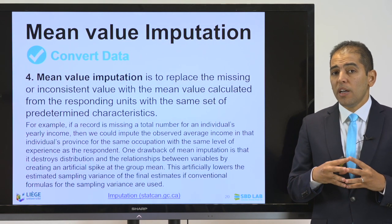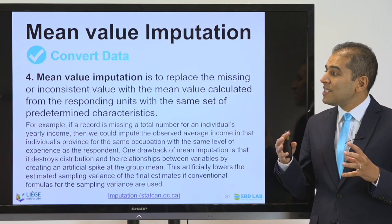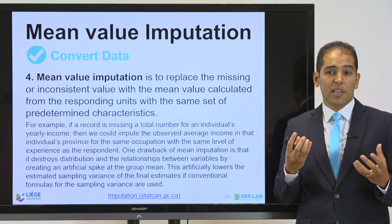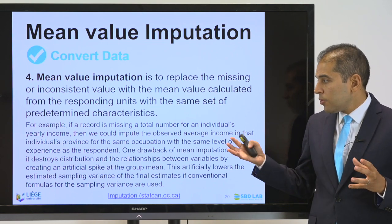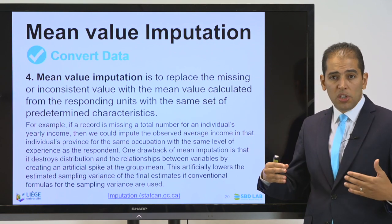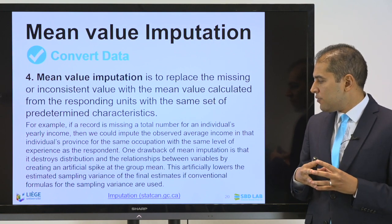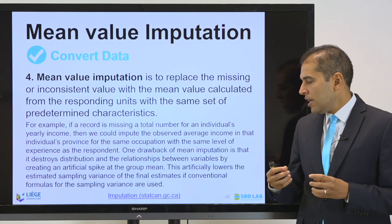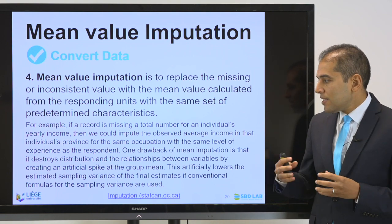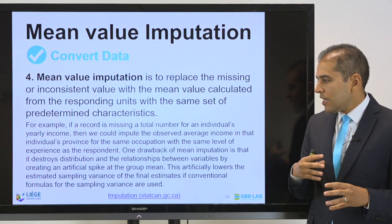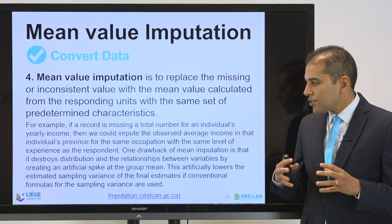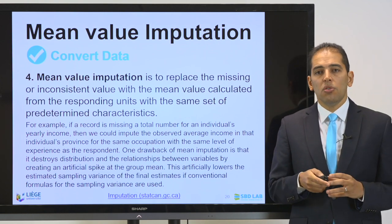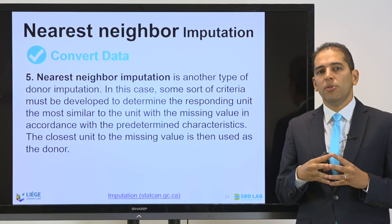The fourth type is mean value imputation, which replaces the missing or inconsistent value with the mean value calculated from responding units with the same set of predetermined characteristics. For example, if a record is missing an individual's yearly income, we could impute the observed average income in that individual's province for the same occupation and level of experience. One drawback is that mean imputation destroys the distribution and relationships between variables by creating an artificial spike at the group mean.